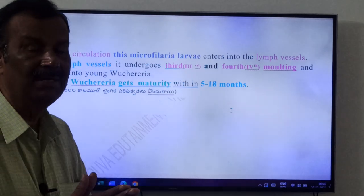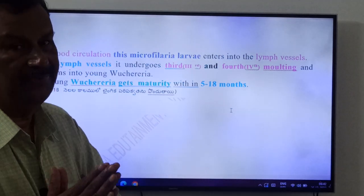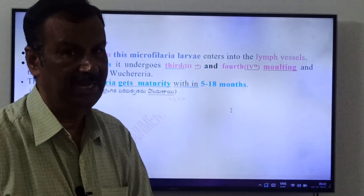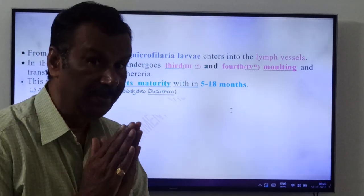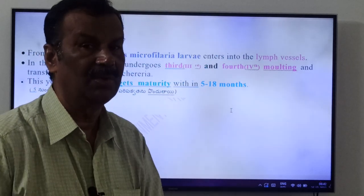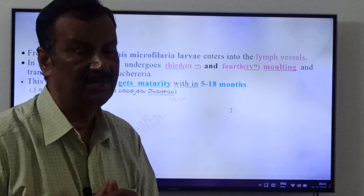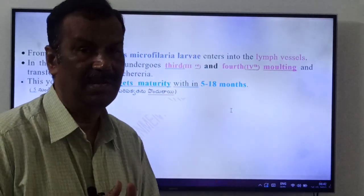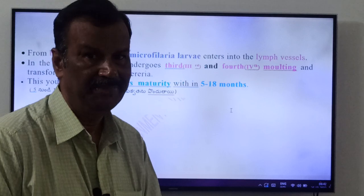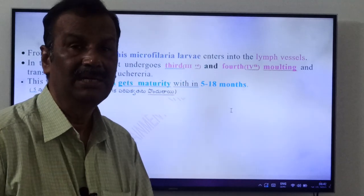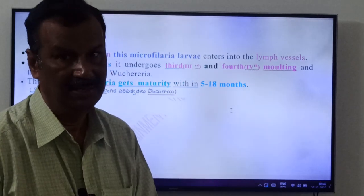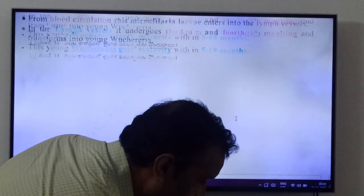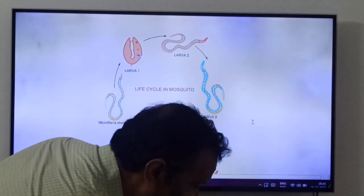The infective stage is the third stage microfilaria larva. Total moltings in Wuchereria: four. The first two occur in the thoracic muscles of the mosquito; the third and fourth occur in the lymph vessels of man. That completes the life cycle of Wuchereria.